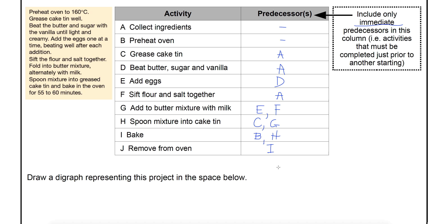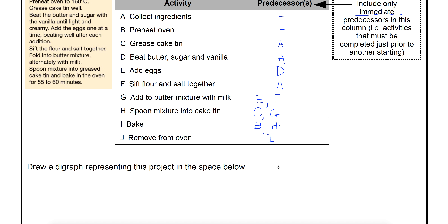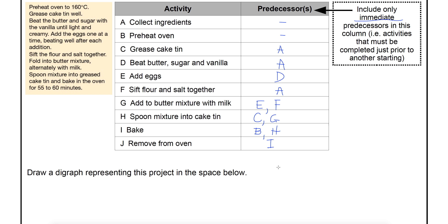Now we have a list of predecessors and we want to draw a digraph that represents this. These can be a little challenging at times. I recommend you have a grey lead and an eraser with you at all times, because a lot of the time you're going to draw an edge and might need to move or extend it. This happens to me as well. I don't know exactly what the network is going to look like just by looking at the table — I start piecing it together as I draw it.